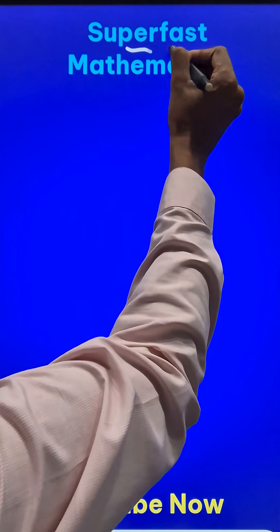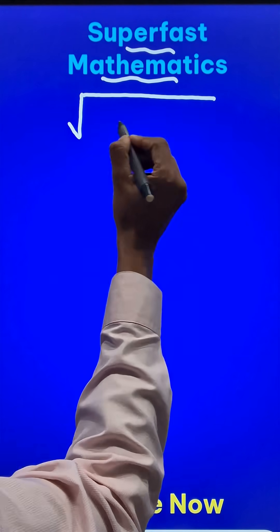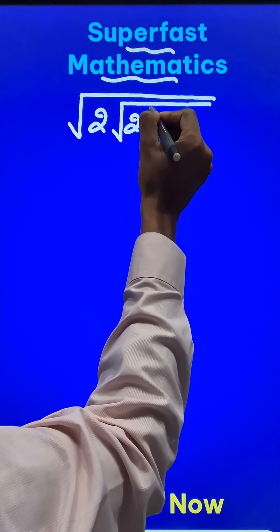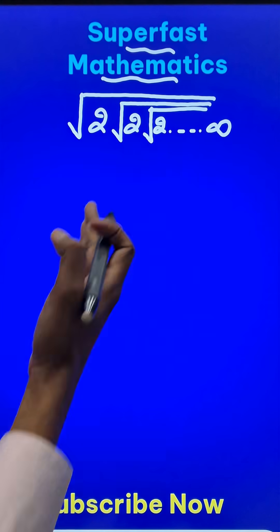Here is a super fast mathematics trick. Suppose you are asked to find what is the value of square root of 2 multiplied by square root of 2, then you keep on multiplying by square root of 2 inside up to infinity. So what do you think the answer should be?